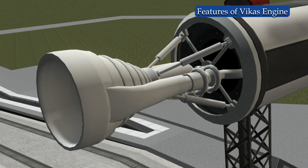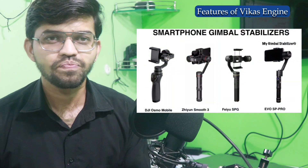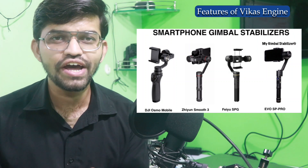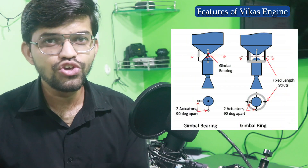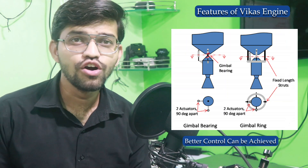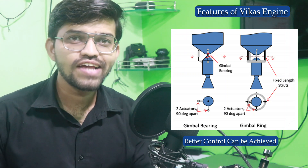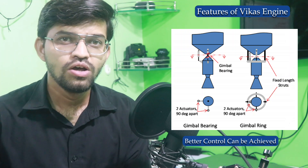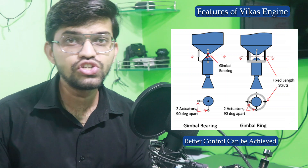This particular Vikas engine also has a feature of gimballing — it can rotate and swivel along the axis. Just like camera gimbals in the market that can rotate and move in any direction, this particular Vikas engine is also capable of gimballing. This allows better control to be achieved, and simultaneously the thrust can be directed to move the rocket in a desired direction.